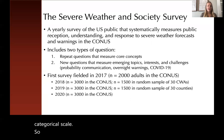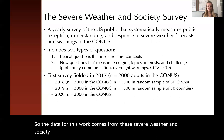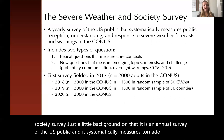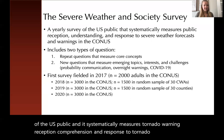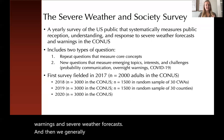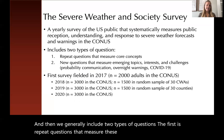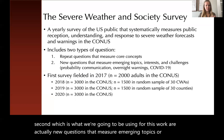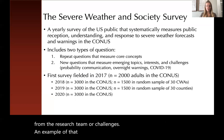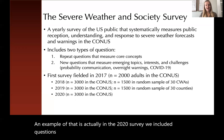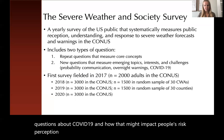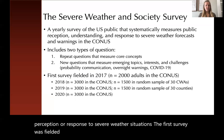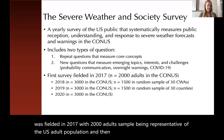The data for this work comes from the Severe Weather and Society Survey. It is an annual survey of the U.S. public, and it systematically measures tornado warning reception, comprehension, and response to tornado warnings and severe weather forecasts. We generally include two types of questions: repeat questions that measure core concepts, and new questions that measure emerging topics or interests — for example, in the 2020 survey we included questions about COVID-19 and how that might impact people's risk perception or response to severe weather situations. The first survey was fielded in 2017 with 2,000 adults representative of the U.S. adult population, and we've had a sample of 3,000 adults since then.